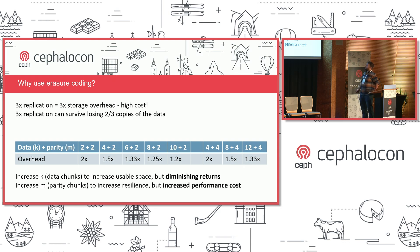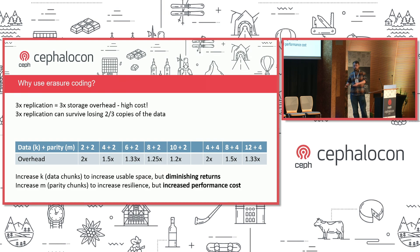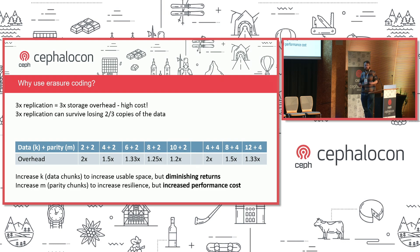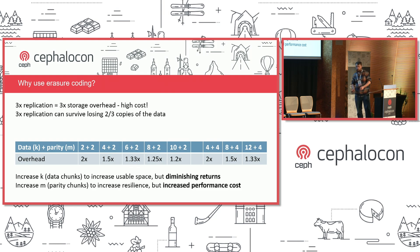As you increase K in the K-to-M ratio, the storage overhead gets better, but there are diminishing returns and a performance impact. M=2 means we can lose any two OSDs or hosts — similar to losing two copies in a 3x replicated pool, and similar to RAID 6 in traditional block or file appliances. Ceph's Erasure Coding is more flexible — you can set M to 3 or 4 if you want to survive losing three or four OSDs, though that impacts storage usage and comes with a performance cost as we have to encode more parity.